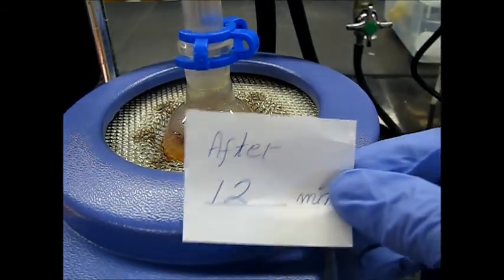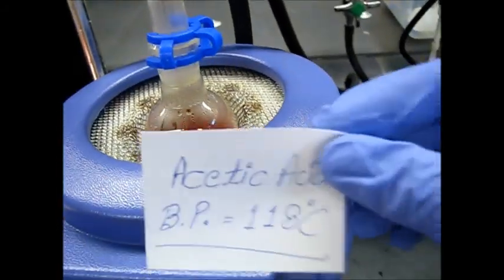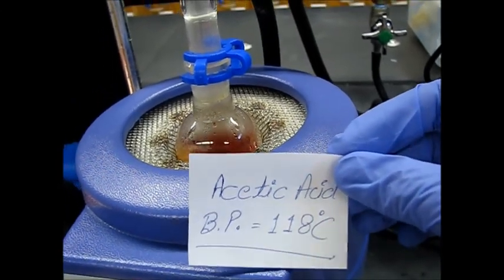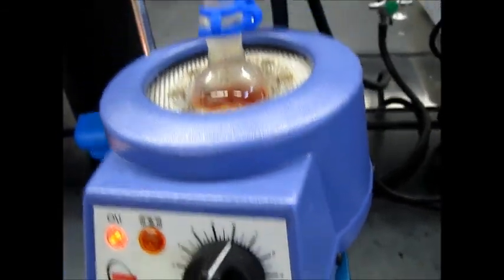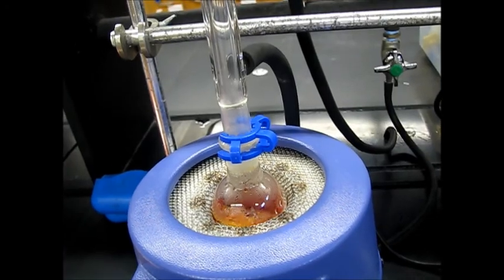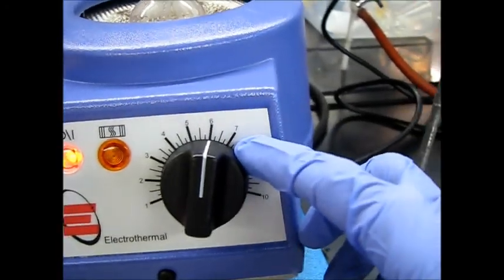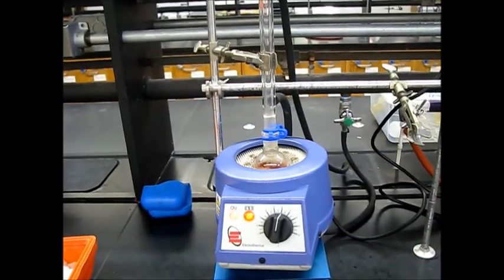So here you can see after 12 minutes, this acetic acid solution started boiling. And acetic acid has a boiling point around 118 degrees Celsius. So we'll boil for 15 minutes. And right now the heating knob is around 6. So we'll keep it as such. We'll come back after 15 minutes.